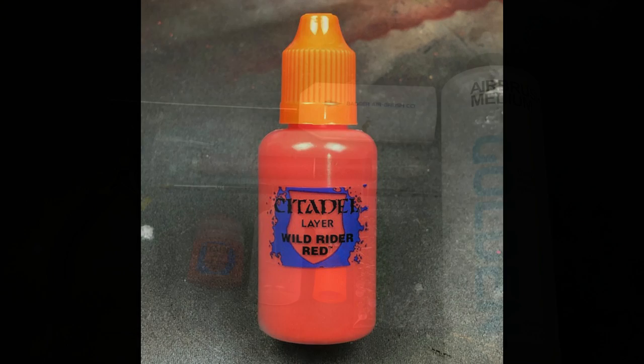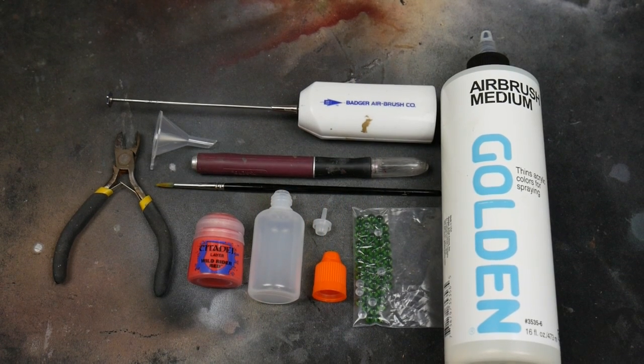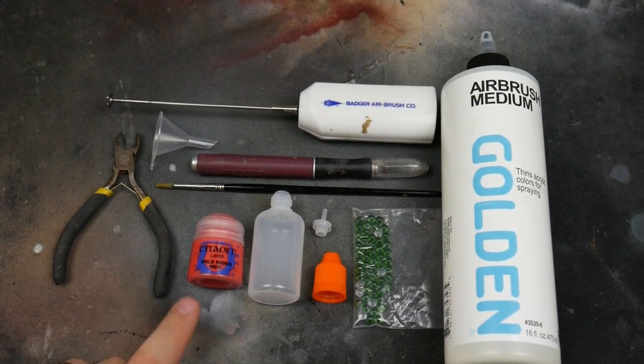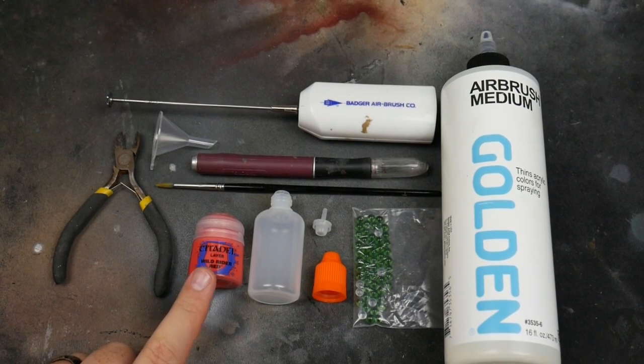Let's talk about the tools we're going to need. Here it is, everything you're going to need: some junky nippers to cut the gates off the Citadel pot, your Citadel pot new or open doesn't matter.